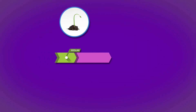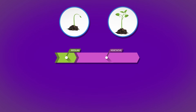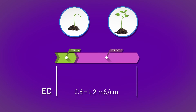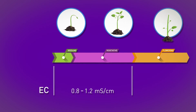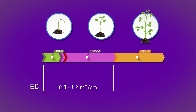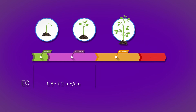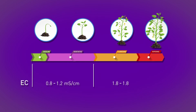The EC depends on the type of crop and its life cycle stage. During the growth stage, plants prefer an EC of about 0.8 to 1.2 millisiemens per centimeter. When the plant begins to flower, its nutritional needs increase, so the EC should rise to 1.8 or 2 millisiemens per centimeter.